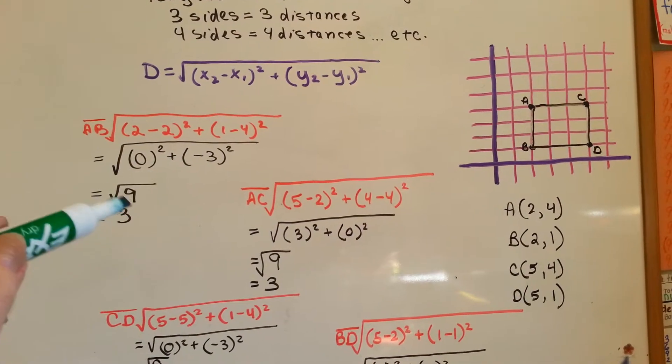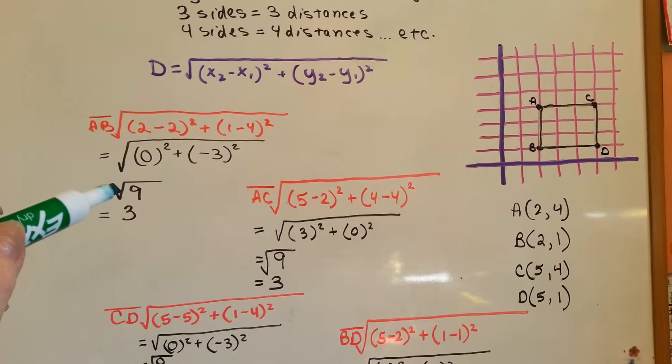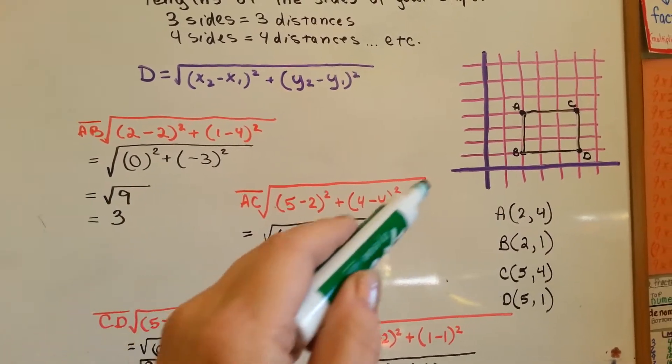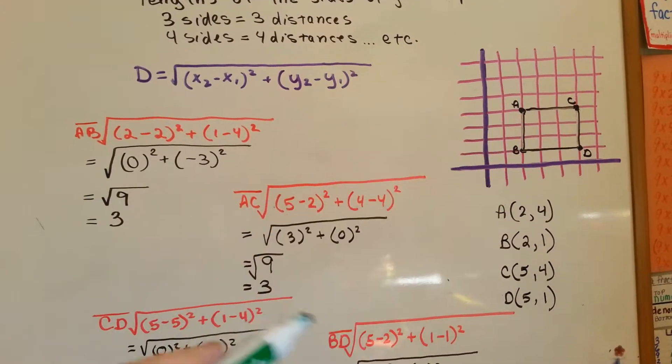0 squared is nothing. Negative 3 times negative 3 is positive 9. So, we have the square root of 9 which is 3. So, now AB is done. AB is 3.